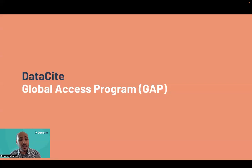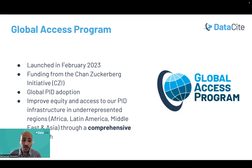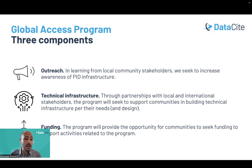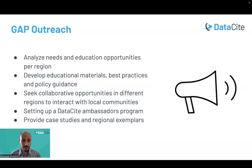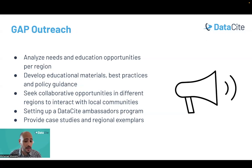Now let's talk about the DataCite Global Access Program — one of our strategic initiatives launched this year. The program was launched in February 2023 through funding received from the Chan Zuckerberg Initiative. Our aim is to increase global PID adoption, particularly in underrepresented regions: Africa, Latin America, the Middle East, and Asia. To achieve this, we took a comprehensive approach with three main components: outreach activities, technical infrastructure, and a funding element. Within outreach, we analyze needs and education opportunities per region, develop regional educational materials in local languages, explore collaboration opportunities, set up an ambassador program, and provide case studies and regional examples.